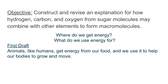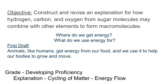If I were to ask those questions — where do we get energy and what do we use energy for — a very basic answer might read something like this: 'Animals, like humans, get energy from our food and we use it to help our bodies grow and move.' If I were to grade that as your teacher, I would give that a developing proficiency. The explanation is pretty limited, mostly just to very obvious, easily observable events. While you do talk about food and the energy in it, you're talking only a tiny bit about matter and you don't really map out where the energy goes or how the energy is transferred from one location to another.